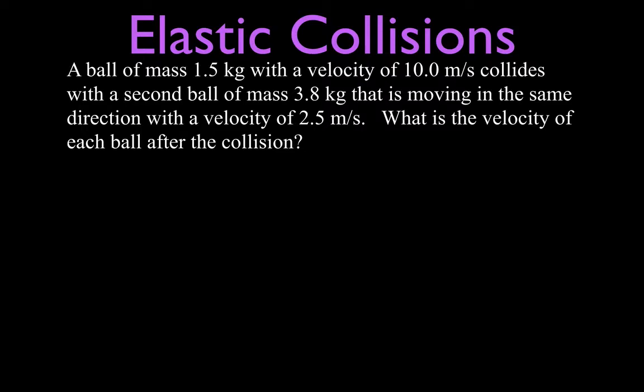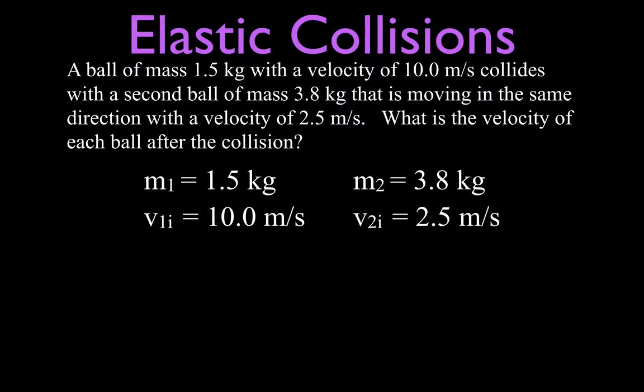Now I like to, since I have two masses and two velocities, I just have to write them down so I don't get them crossed or mixed up. So I put down m1 is 1.5 kilograms, the initial velocity of mass number one is 10 meters per second. Then we have a second mass which is 3.8 kilograms and it has an initial velocity of 2.5 meters per second.